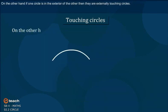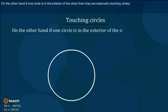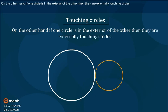On the other hand, if one circle is in the exterior of the other, then they are externally touching circles.